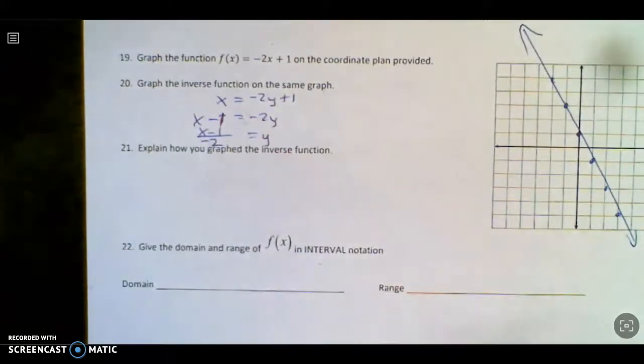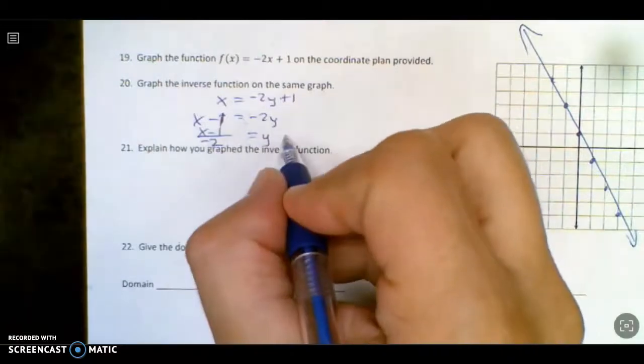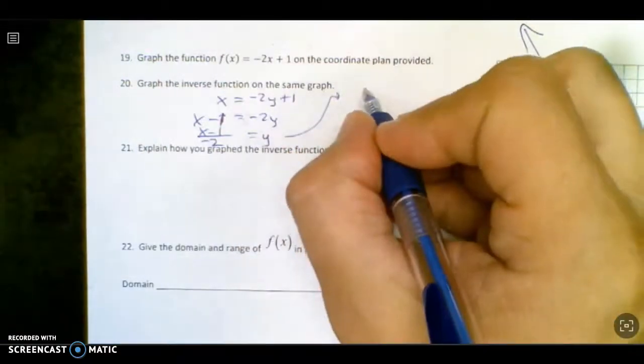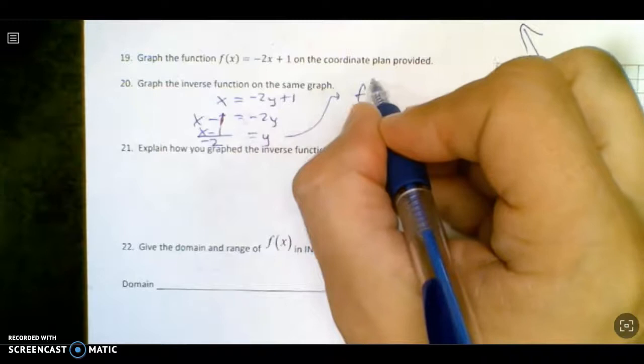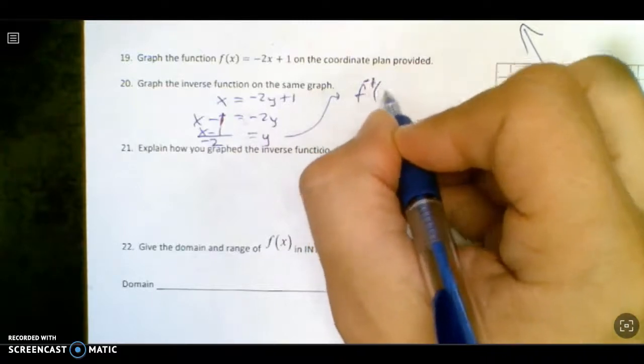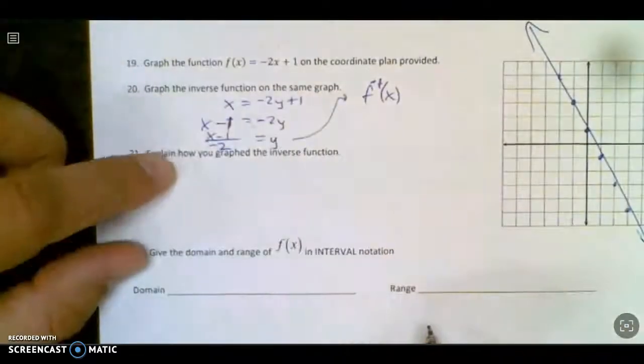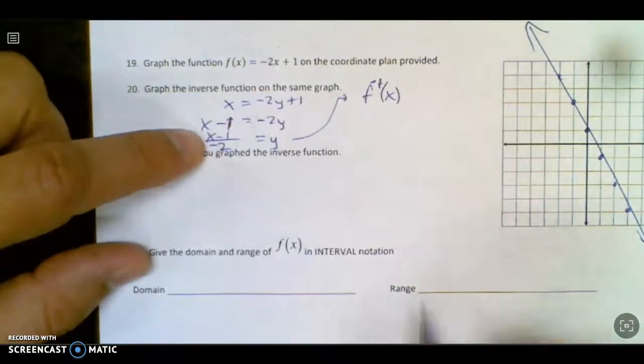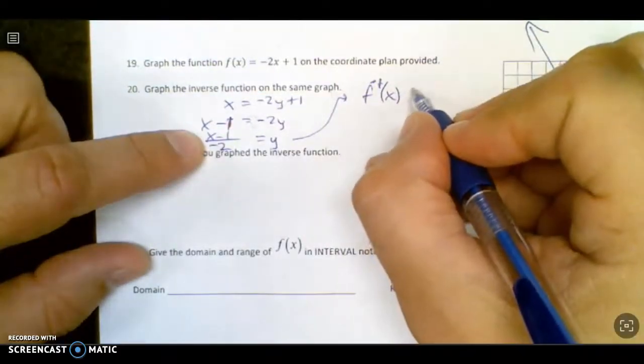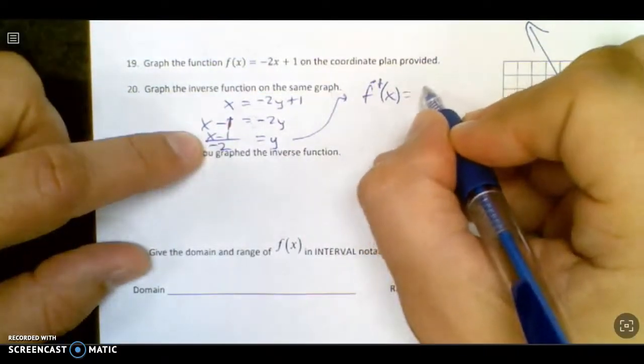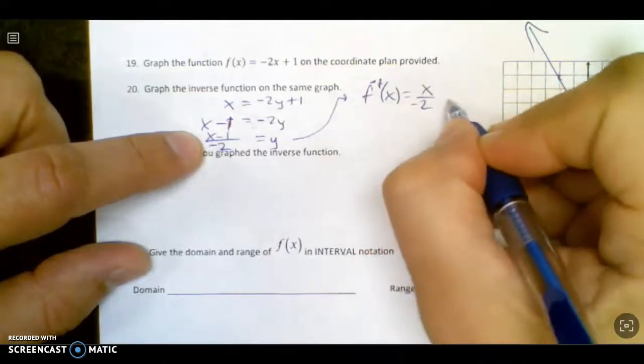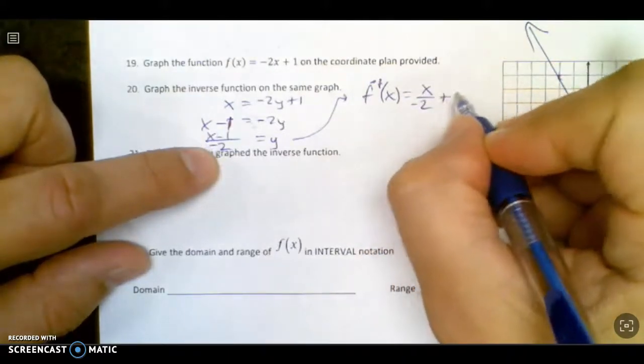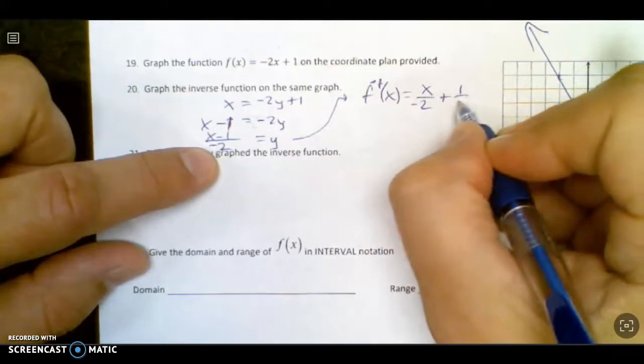And then I'm going to graph that. Now it helps me not only to write it as inverse f of x, but to write it, since I'm going to be graphing this, it helps me more to write x over negative 2 plus 1 over negative, or 1 over 2.